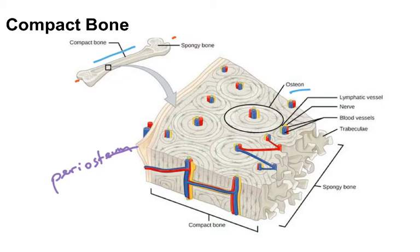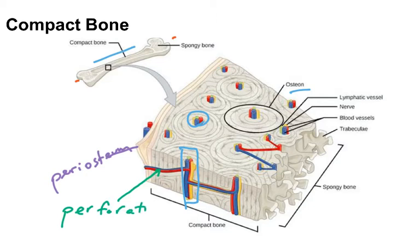If we're looking from the side, the central canal is here; if we're looking from the top, it would be here. The central canal contains lymphatic vessels, nerves, and blood vessels. It also contains passageways referred to as perforating canals, which allows for branching of the blood vessels. These perforating canals connect different central canals.